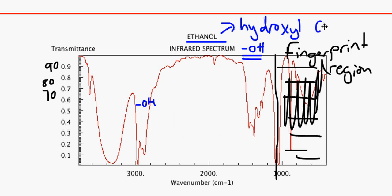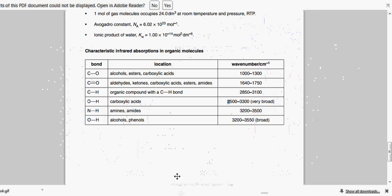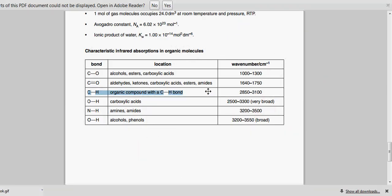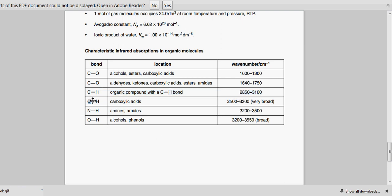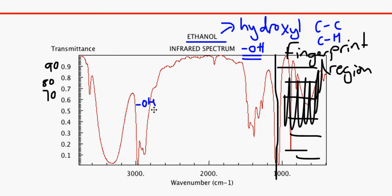We also have carbon to carbon bonds and carbon to hydrogen bonds. Carbon to hydrogen bonds are from 2850 to 3100. We need to be careful because they're on the same path. The way to distinguish a C to H bond from an O to H is that the O to H has to be very broad. If it is C to H, it would be relatively narrower than the OH. This is what alcohol groups look like in the infrared spectra.